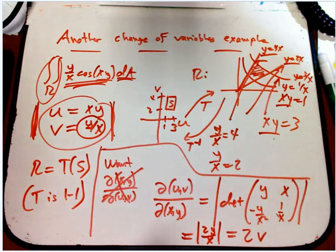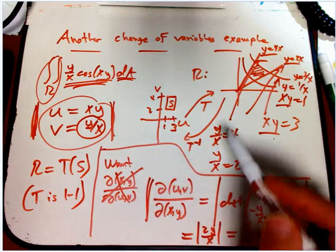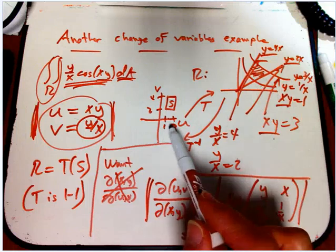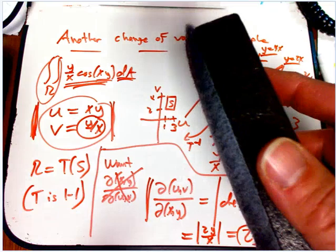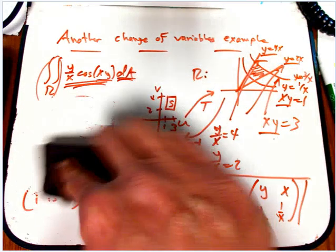Now remember, that's the Jacobian determinant if you're going from x's and y's to u,v's. But all we have to do is take the reciprocal of that. So we are just about ready.